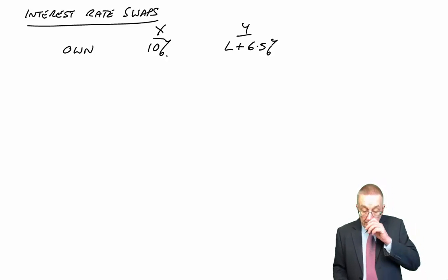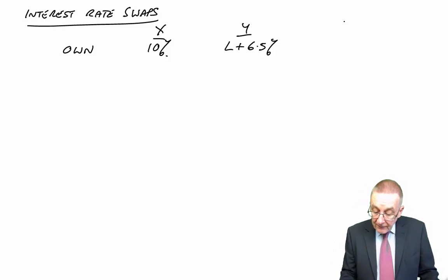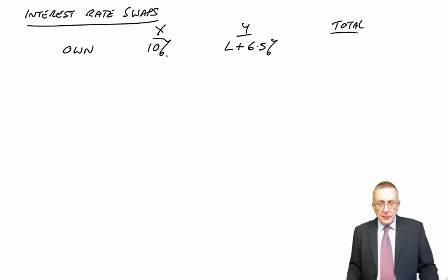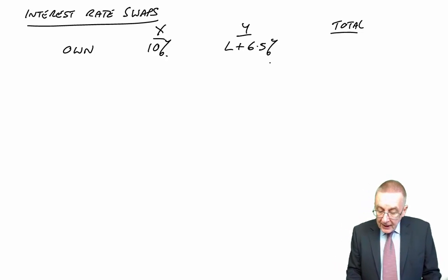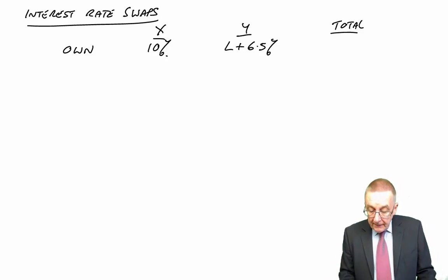Now, if they did their own borrowing, and in total, if we assume they're borrowing the same amounts, they both want to borrow perhaps a million, then overall, the total interest being paid, 10% plus LIBOR plus 6.5% is what? LIBOR plus 16.5%. I've just added the two together.